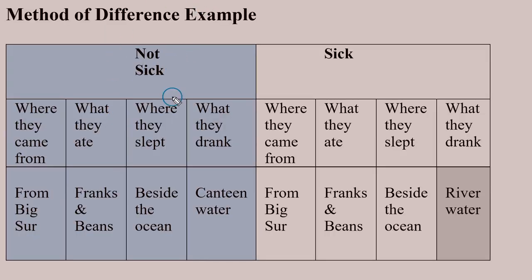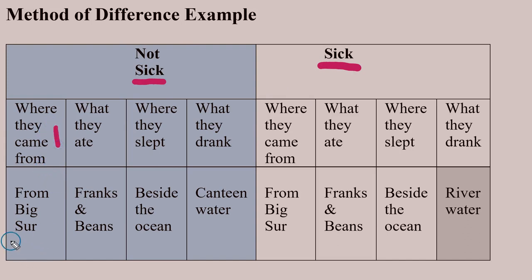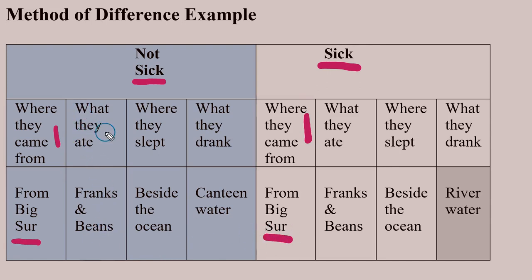Here's a little diagram of what that might look like. Here's those who did not get sick, here's those who did. Where did they come from? The ones who didn't get sick came from Big Sur. Those who did get sick also came from Big Sur — it's a match. What did they eat? Franken beans for one group, franken beans for the other. What about where they slept? Beside the ocean,